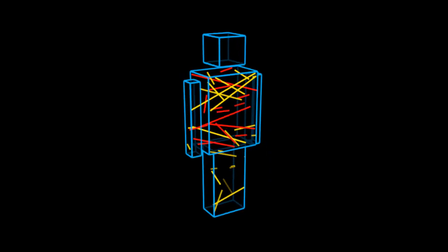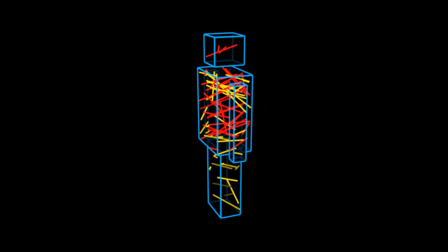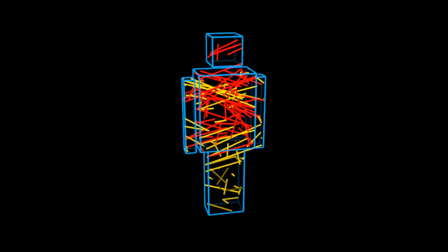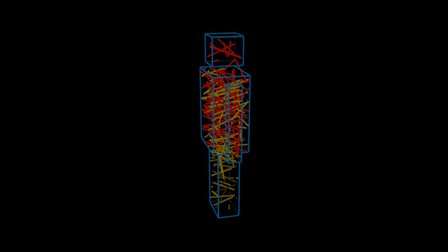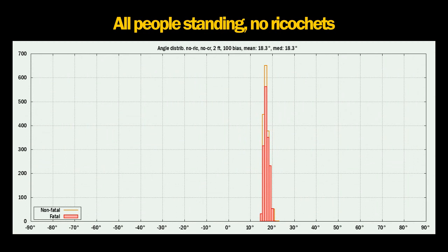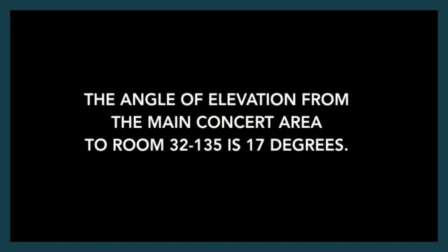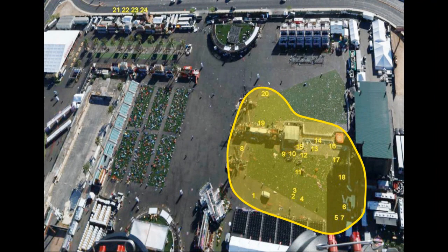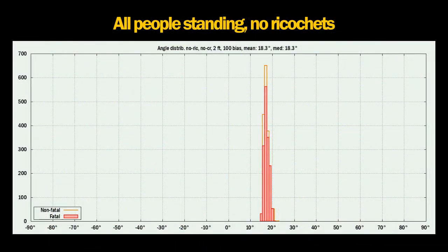The red lines are fatal wounds and the yellow lines are non-fatal wounds. The first test is of all people standing, with no ricochets. The resulting distribution of wound angles shows positive values mean the entry wound is above the exit wound, and vice versa. Red boxes are fatal, yellow lines are non-fatal. As expected, the angles cluster just under 20 degrees. The video in question shows 17 degrees as the angle between Paddock's suite and the festival area, but this is the angle to the center point. The shooter targeted the area closer to him, which is why the average angle is a bit higher, just over 18 degrees.